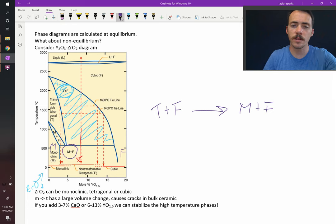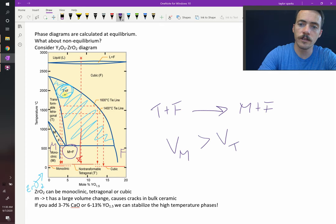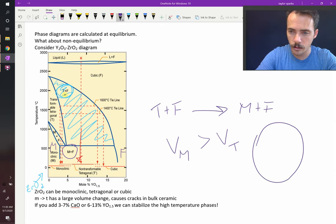What's interesting about this is that there's a phase change. The volume of the M phase is larger than the volume of the T phase. And so what happens is that in these ceramics, when a little crack occurs, you've got your ceramic, and a little crack occurs, and you have this mixture of T plus F everywhere.